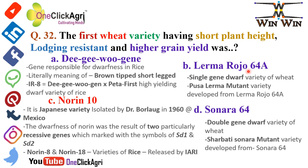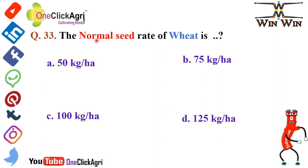B option: Lerma Rojo 64A is a single-gene dwarf variety of wheat, and from Lerma Rojo 64A the variety Pusa Lerma was developed as a mutant variety. D option: Sonara 64 is a double-gene dwarf variety of wheat, and from Sonara 64, Sharbati Sonara 64A was developed as a mutant variety.